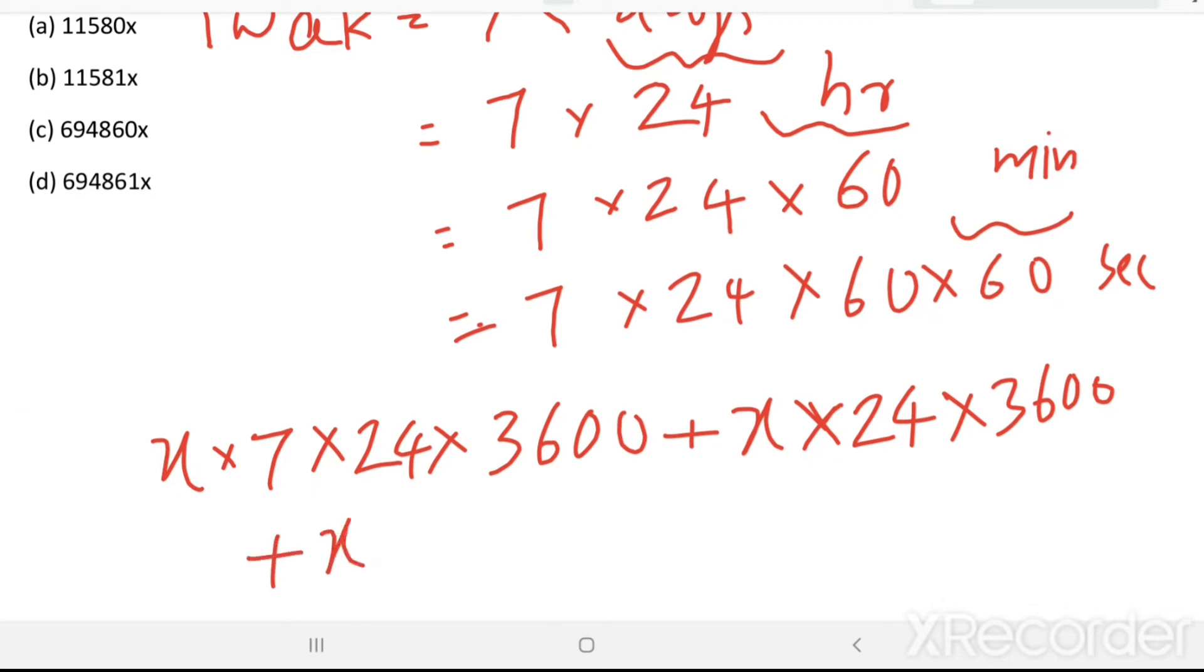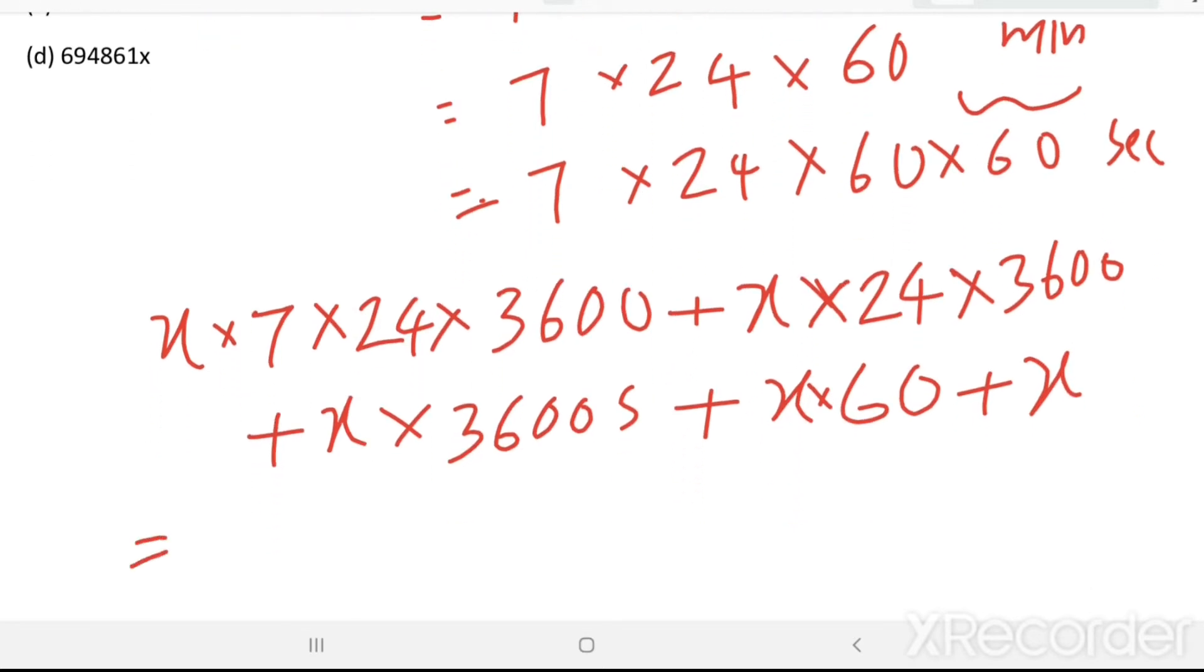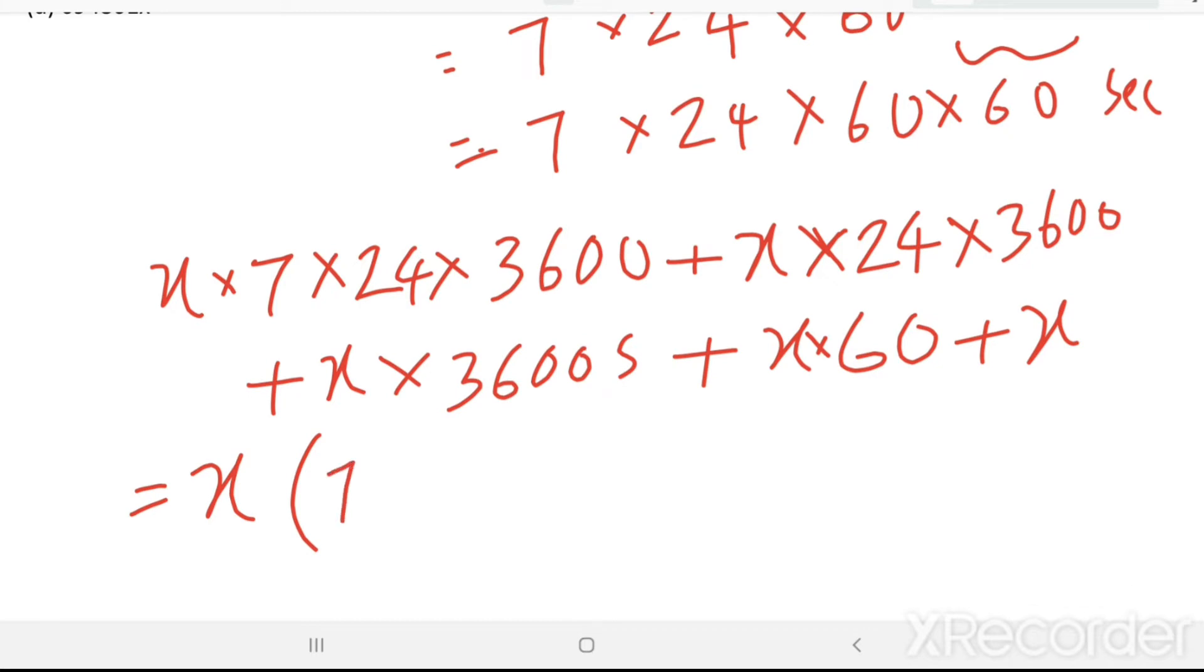Then X hours equal to 1 hour equal to 60 into 60 seconds. That means 3600 seconds. Then X minutes equal to 60 into 60 seconds. Then X seconds equal to X seconds.